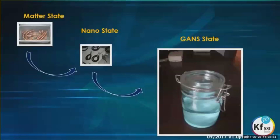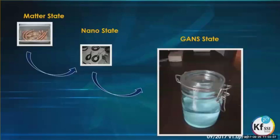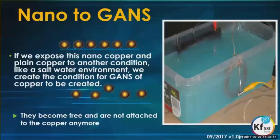We start out with the matter state, we create the nano, and in later workshops we'll be showing you how to create your GANS material using different metal plates — one nano, one non-nano. If we expose nano copper and plain copper to another condition like a saltwater environment, we create the condition for the GANS of copper to be created.